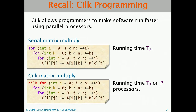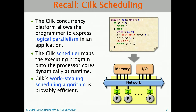Just to quickly recall something you're all intimately familiar with by this point: what's Cilk programming all about? Cilk is a parallel programming language that allows you to make your software run faster using parallel processors. To use Cilk, you just insert Cilk keywords in choice locations — for example, you can parallelize the outer loop in a matrix multiply kernel — and that will let your code run in time T_p on P processors.